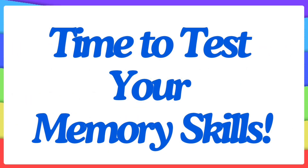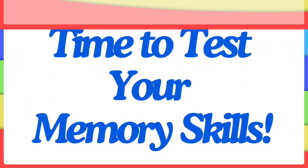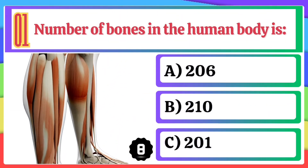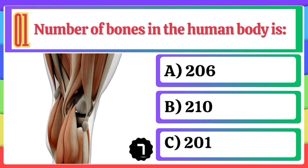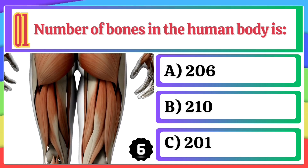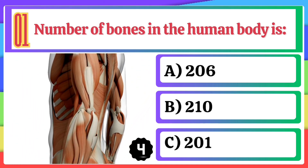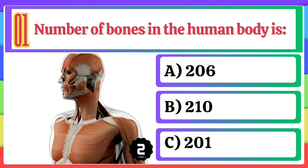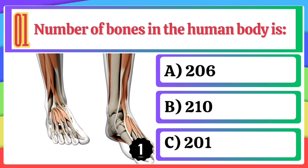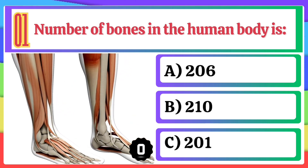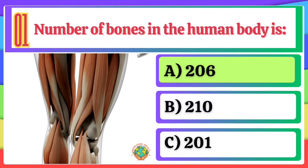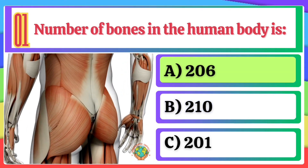Time to test your memory skills. Number of bones in the human body is: A) 206, B) 210, C) 201. The correct option is A, 206.